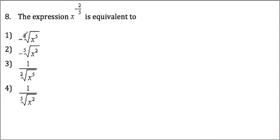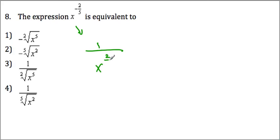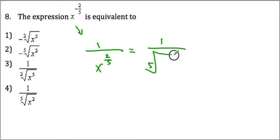Number 8: the negative exponent means that equals 1 over x to the 2 over 5. The denominator of 5 is the index of the root, so we get the 5th root of x squared. Therefore our answer is choice 4.